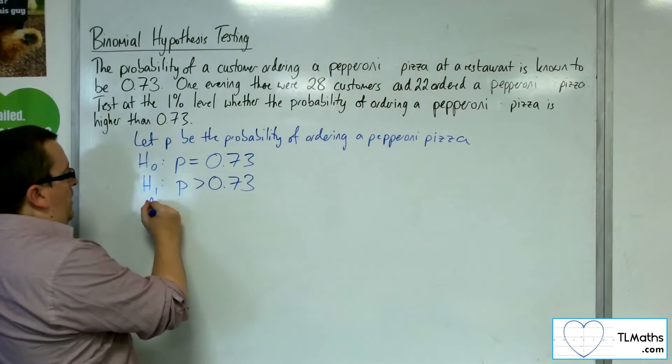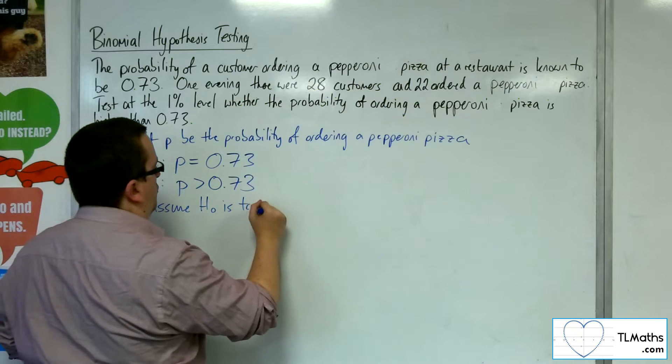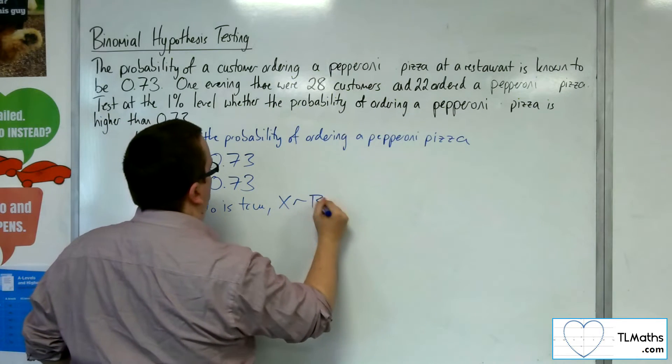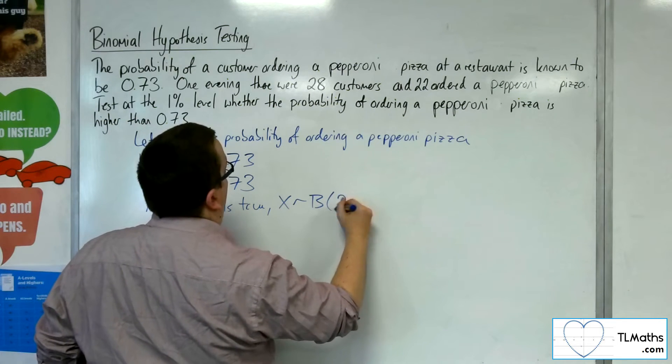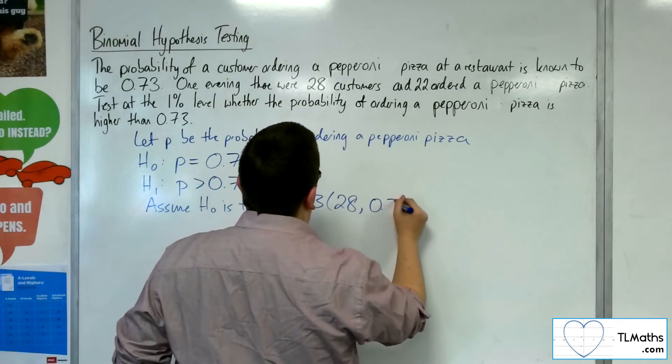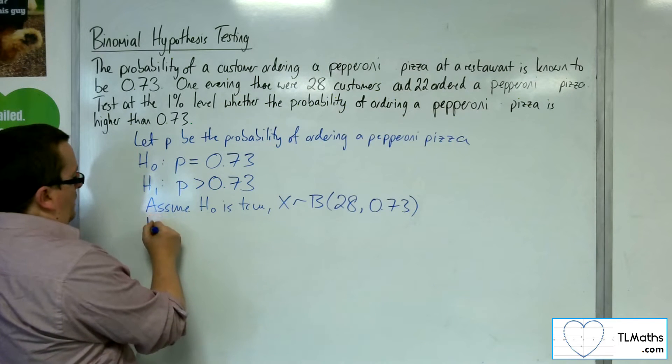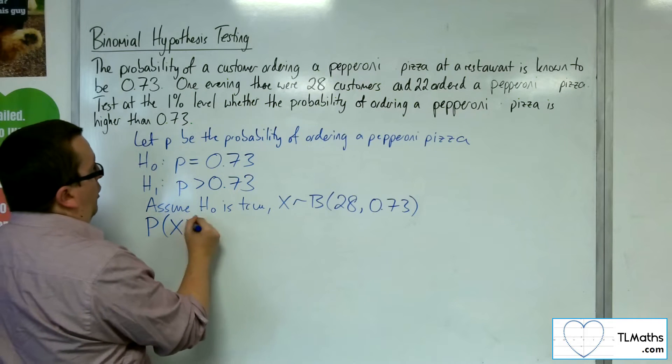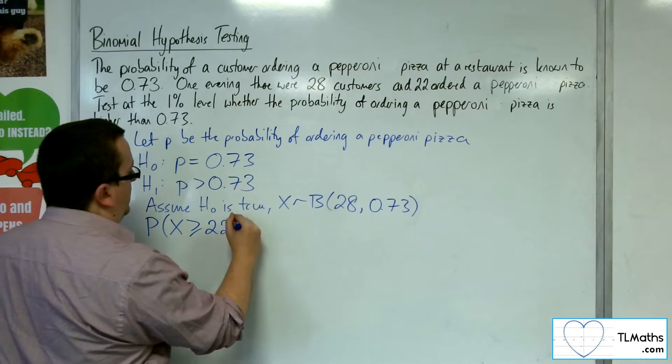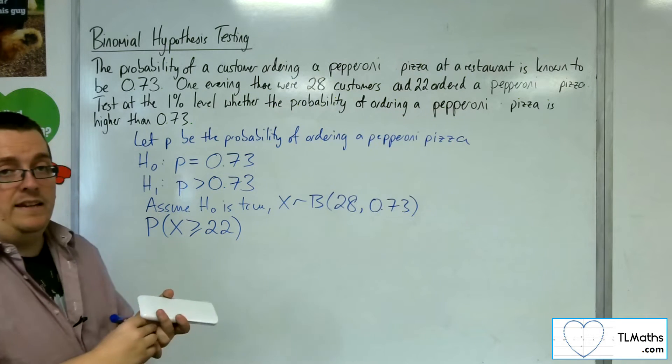We assume H0 is true and set up a binomial distribution with N = 28 because there were 28 customers and a probability of 0.73. We want to determine whether the probability of getting 22 or more customers ordering a pepperoni pizza is significant.